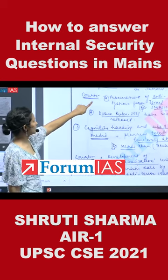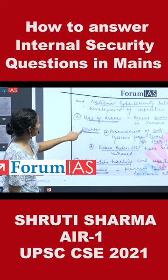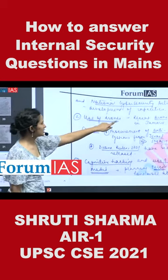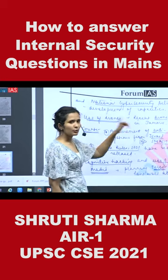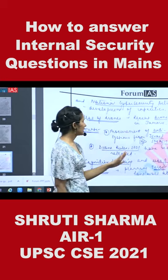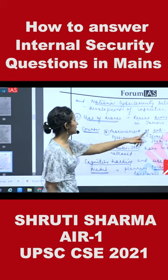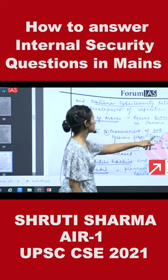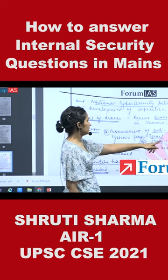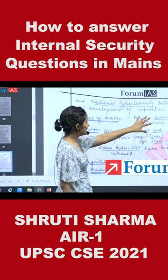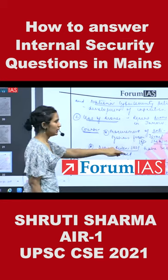Then the other threat, then what the counter is. For example, the use of drones — the recent drone attack in Jammu. You will have to write the counter: procurement of anti-drone systems from Israel, for example the SMASH 1000 system. These examples I took from the newspaper only.